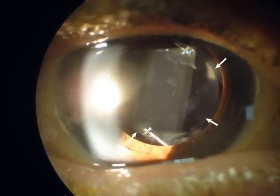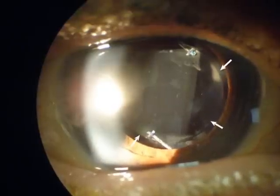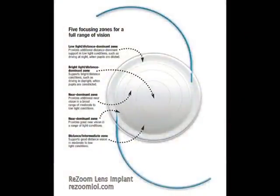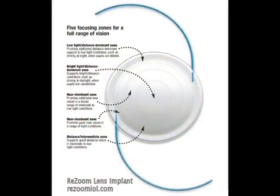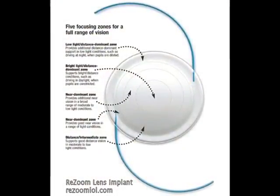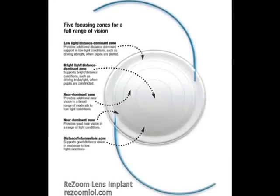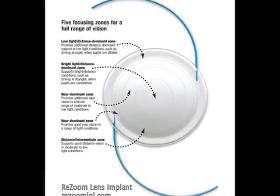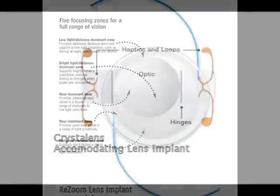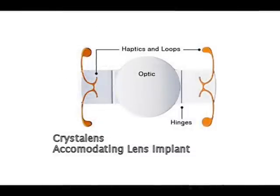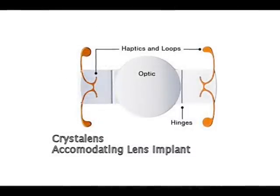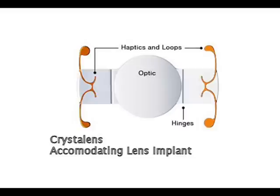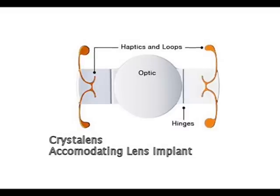The technology continues to improve, especially in lens implant design. New lens implants are advancing from the traditional single focus lens to multifocal lenses. This is one kind of multifocal called a ReZoom lens — different areas of the lens focus light from different distances. This is a Crystalens, an example of an implant that changes focus by moving within the eye in response to action of the focusing muscles, more closely mimicking the natural action of the human eye.